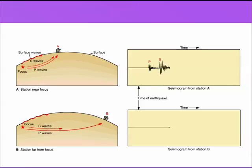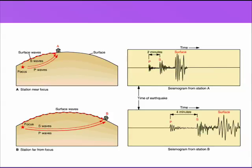Here you can see two stations. Station A receives the P waves first, and then Station B receives them. But also, the gap between the P and the S waves is greater at Station B. So we can use that gap to determine the proximity of any station to the focus of the earthquake.